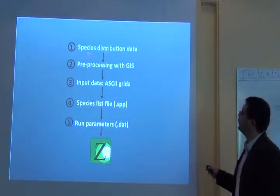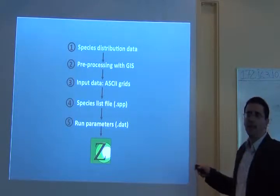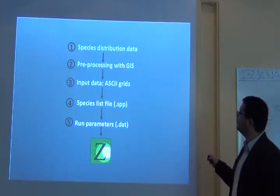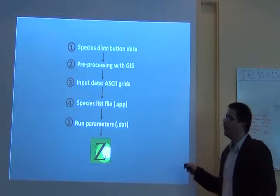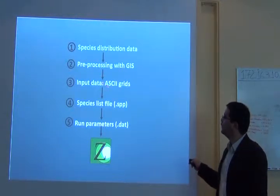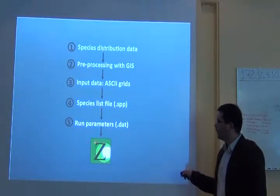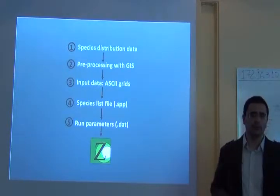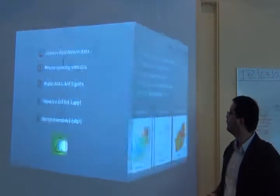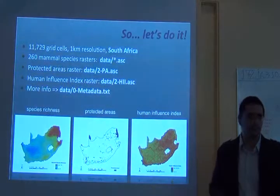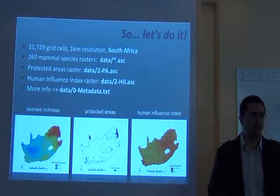So this is the basic workflow. You have the species distribution data. You do some pre-processing with GIS to get the ASC files as input data. Then you have to produce the species list file, the run parameters, and the command line. Then you're ready to run with zonation. So far?